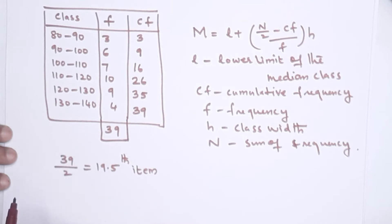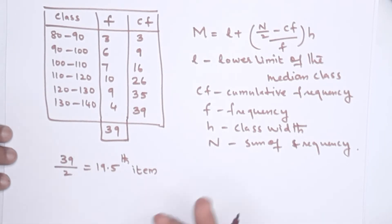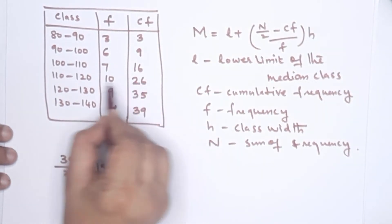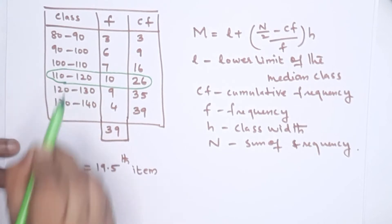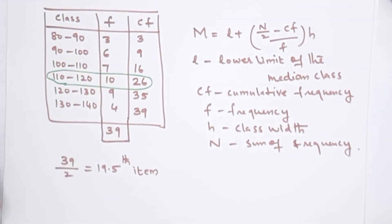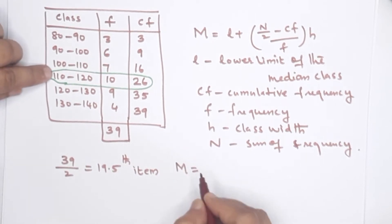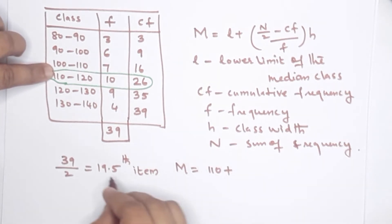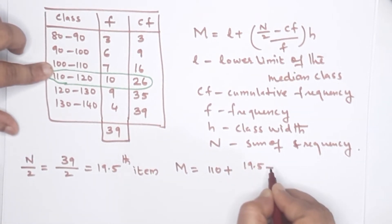The 20th item is the 19.5th item. I am in this class. Median is equal to L. L is 110, so 110 plus — this is N by 2, that means 19.5 minus CF.